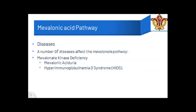If the mevalonic acid pathway is in excess or is being inhibited, a deficiency or disease can occur. One such deficiency is mevalonate kinase deficiency, which leads to conditions including mevalonic aciduria and hyperimmunoglobulinemia D syndrome. We will discuss later what these diseases are, their symptoms, and how to identify whether a person is suffering from a deficiency or excess of mevalonic acid.